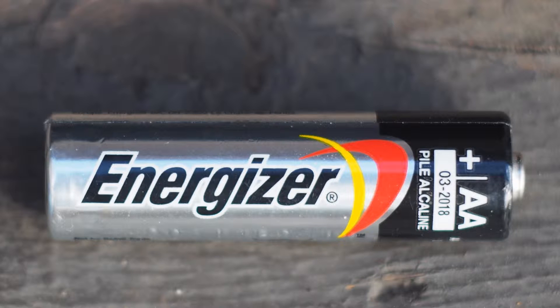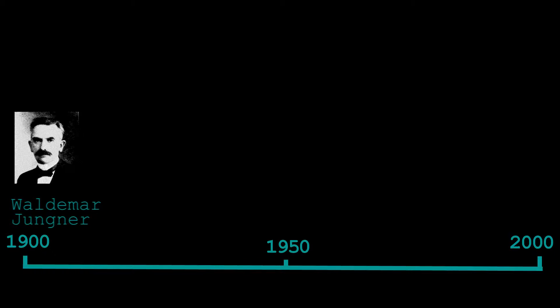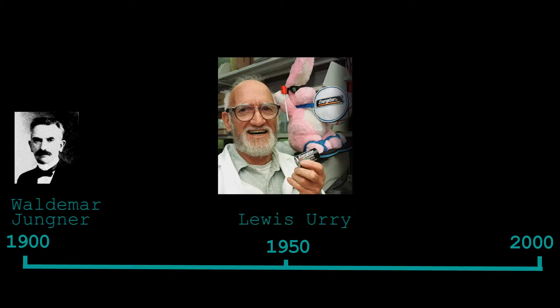One of the most common types is called the alkaline battery. The first alkaline battery was developed in 1899 by Waldemar Jungner, and the modern alkaline battery was developed by Lewis Urry in the 1950s.